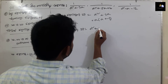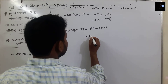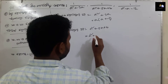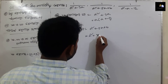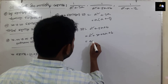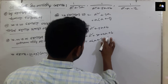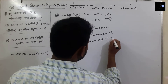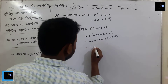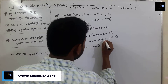Now for a square plus 5a plus 6. We can write a square plus 3 plus 2, giving 6 and 3 plus 2 equals 5. So a plus 2a plus 6. We can write a plus 3.